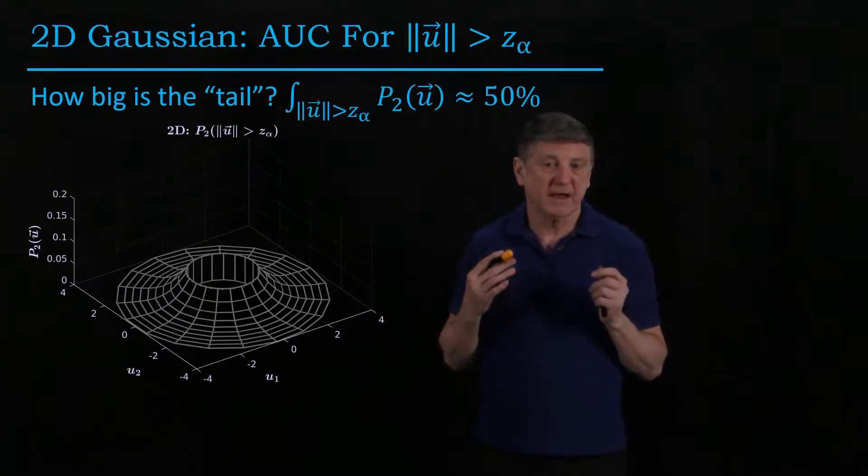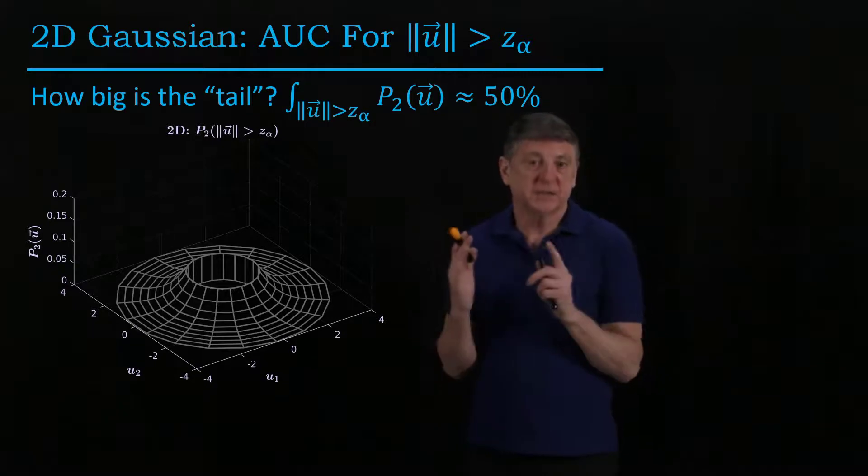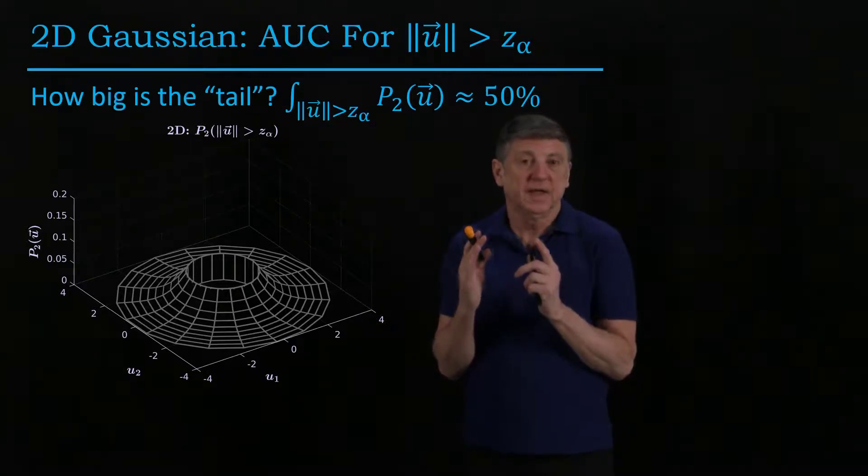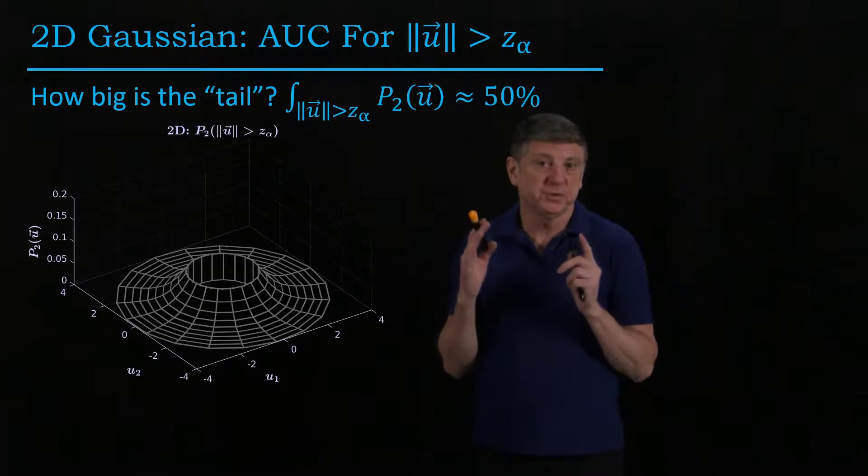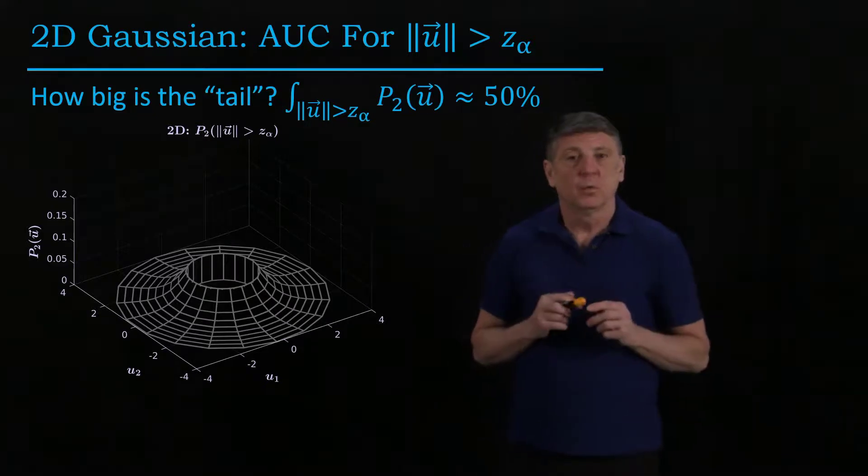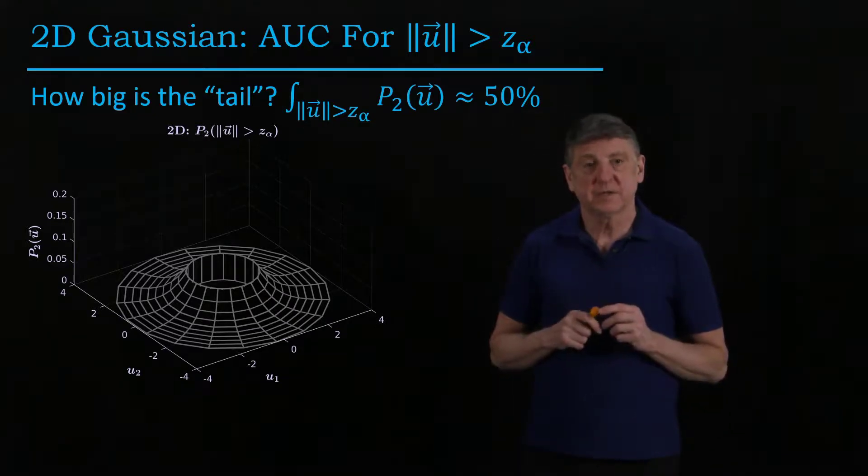So what we have in one dimension is the central part contains about 76% of our data. If we go into two dimensions, we're finding that close to the origin only contains 50%. What happens as we increase the number of dimensions?